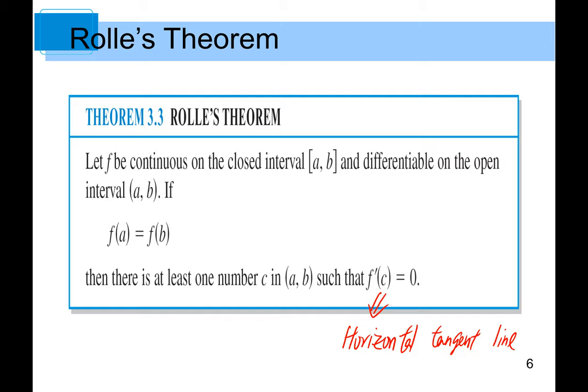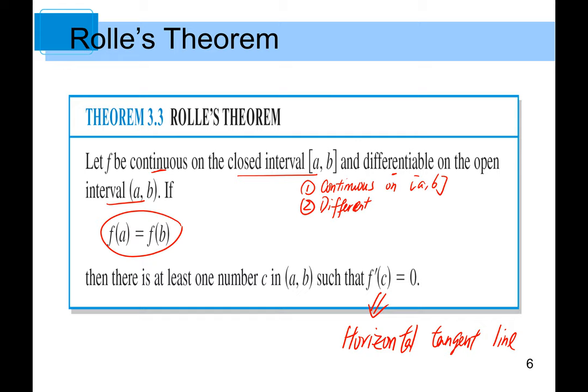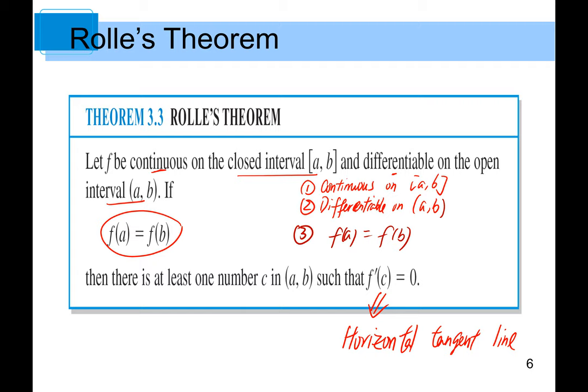So the three conditions are: first, f is continuous on the closed interval [a, b]; second, f is differentiable on the open interval (a, b); and third, f(a) equals f(b). If these three conditions are satisfied, we guarantee there is a horizontal tangent line within the interval.